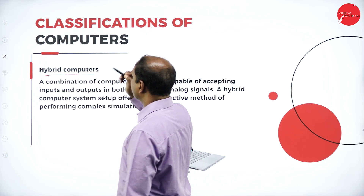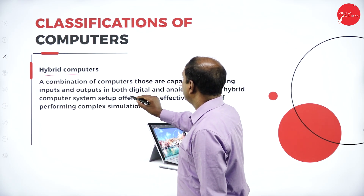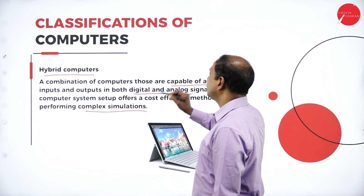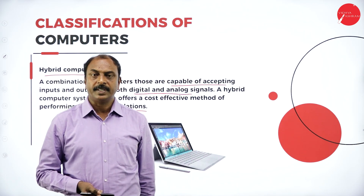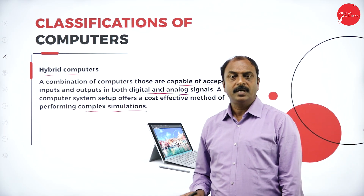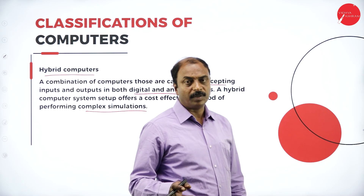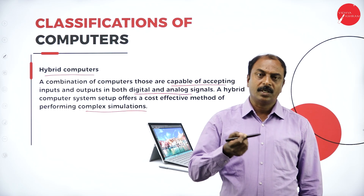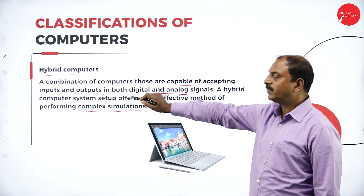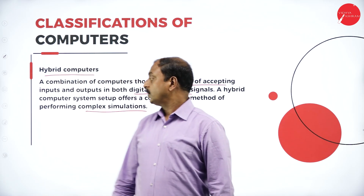The next type is the hybrid computer. Hybrid computers are capable of accepting input and output in both digital and analog signals. A hybrid computer system offers a cost-effective method of performing calculus and simulations. It is a combination of analog and digital computers, used to work with both analogous and digital data, and produces results in both analogous and digital form. There is a separate section to process each type of data. A hybrid computer combines features of both analog and digital computers.